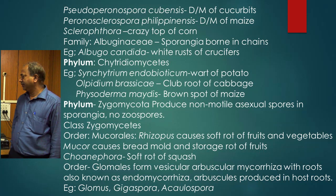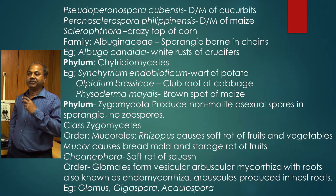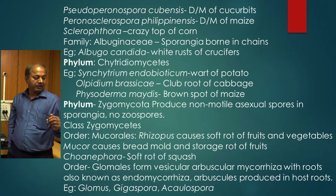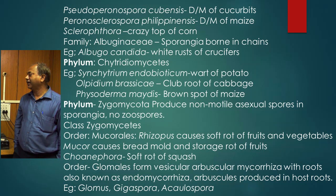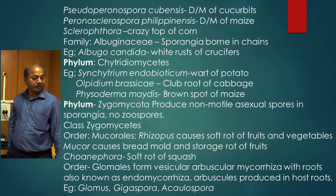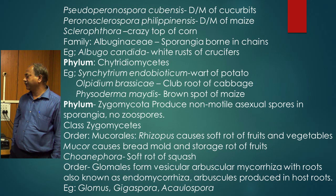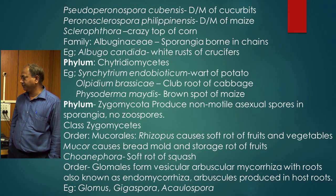In Zygomycetes, it produces non-motile asexual spores in sporangia, and no zoospores are produced. In the family Albuginaceae, the sporangia are born in chains, and the genus Albugo candida causes white rust of crucifers. Under order Mucorales, Rhizopus and Mucor come. Rhizopus causes soft rot of fruits and vegetables, and Mucor causes bread mold and storage rot of fruits.